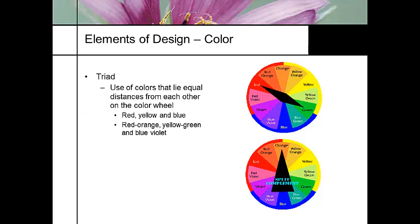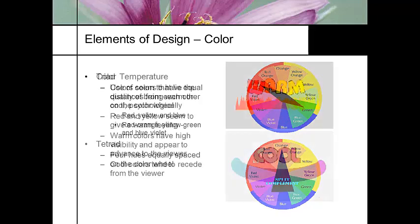Triad is where colors lie equal distances from each other on the color wheel — you can use red, yellow, and blue or red, orange, and so forth. A tetrad uses four hues. At this point we're starting to get confusing.